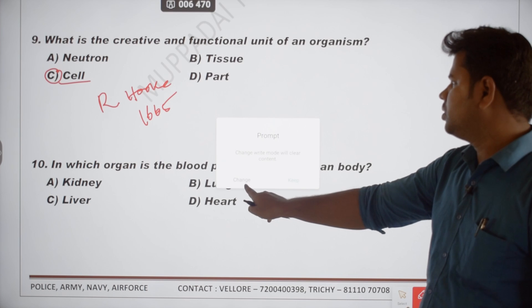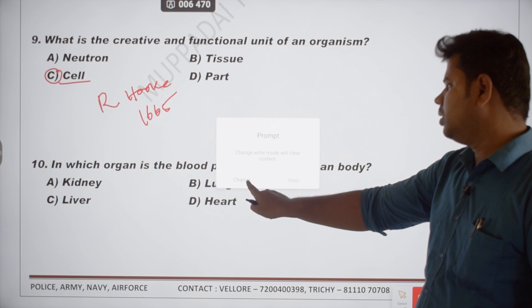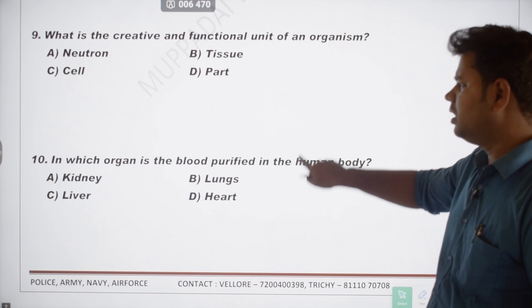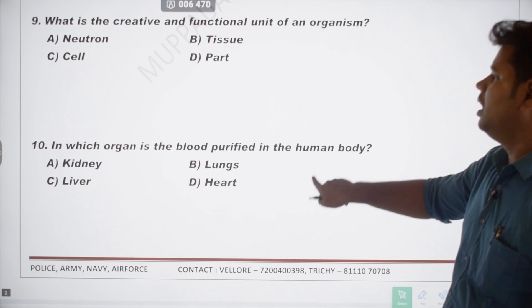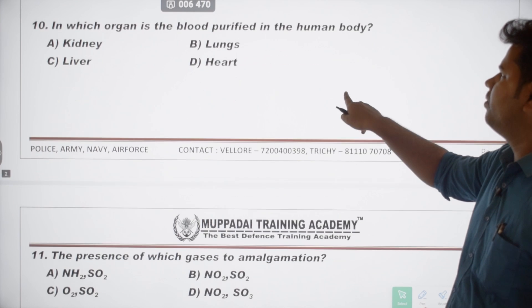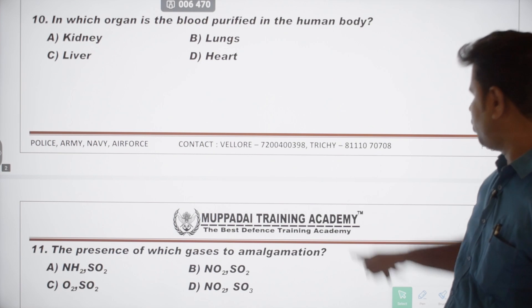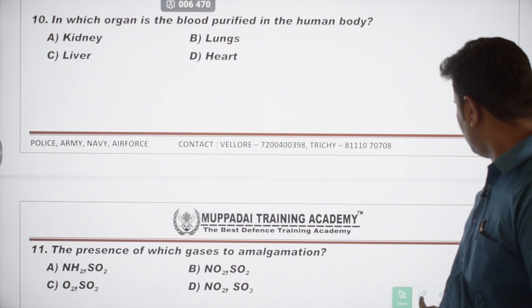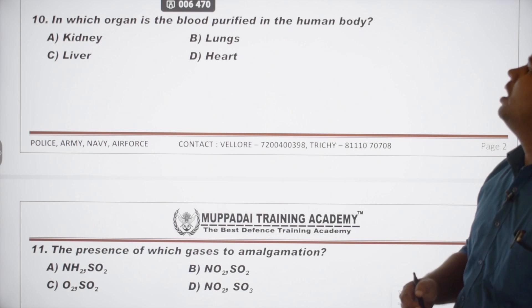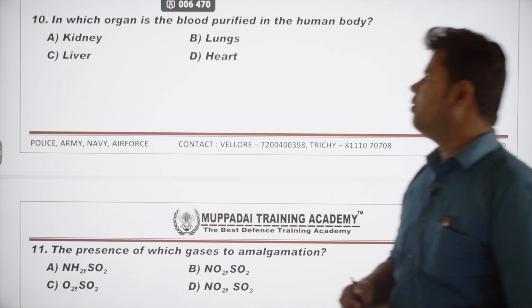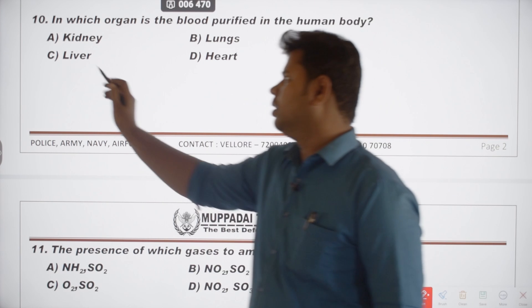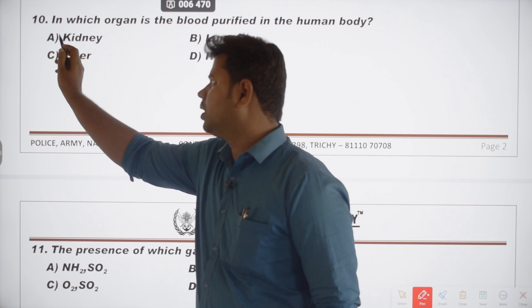The next question: in which organ is the blood purified in the human body? Blood is purified in the kidney. This is one simple question.